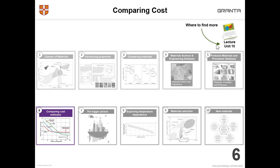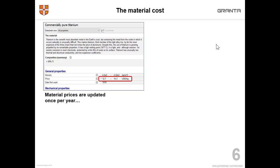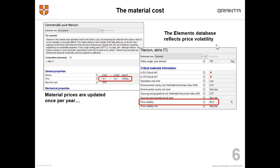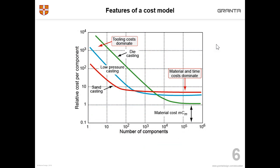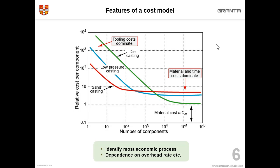Here we have the science notes explaining how specific heat capacity and thermal conductivity relate to how warm it feels when you touch it. Comparing process costs — we have information about the cost of materials displayed as a range of values, and it's updated once a year. In the elements database, as part of the critical material information, we also look at the price volatility of different elements. And there are science notes highlighting issues around price and cost. In the process data table, we also have a cost model to calculate the relative cost index of a process.